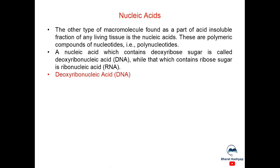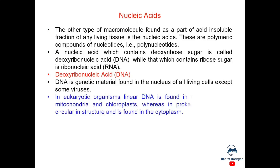Now, deoxyribose nucleic acid or DNA. DNA is genetic material found in nucleus of all living cells except some viruses. In eukaryotic organisms, linear DNA is found in nucleus in the mitochondria and chloroplasts, whereas in prokaryotes, DNA is circular in structure and is found in the cytoplasm.